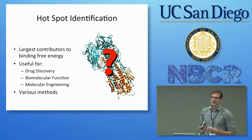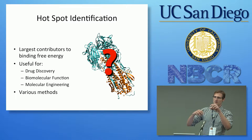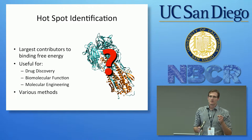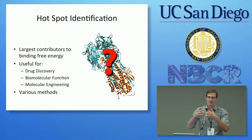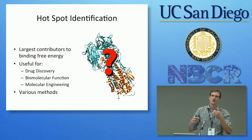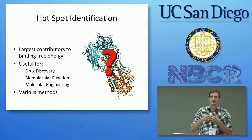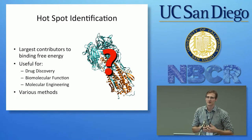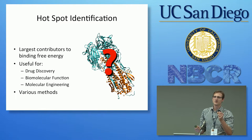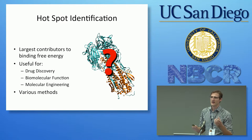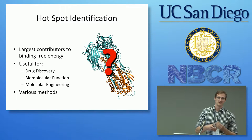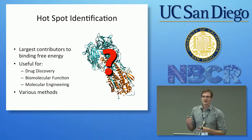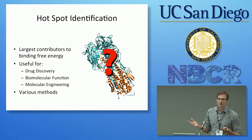What we mean by a hot spot is that on the surface of a biomolecule there are regions that would be touching something that would bind to that biomolecule or protein — whether that's a drug, an interface to form a dimer or trimer, or maybe an allosteric site. These hot spots contribute disproportionately to the free energy of binding between the biomolecule and whatever the substrate is.